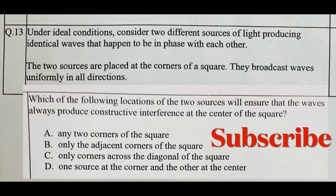Under ideal conditions, consider two different sources of light producing identical waves that happen to be in phase with each other. The two sources are placed at the corners of a square and broadcast waves uniformly in all directions. Which of the following locations will ensure the waves always produce constructive interference at the center of the square? A) any two corners, B) only adjacent corners, C) only corners across the diagonal, D) one source at a corner and other at the center.